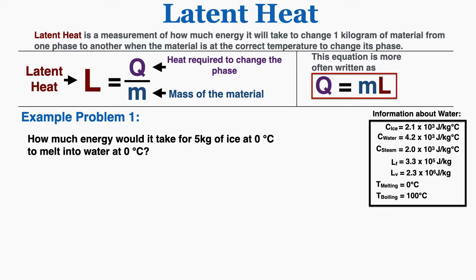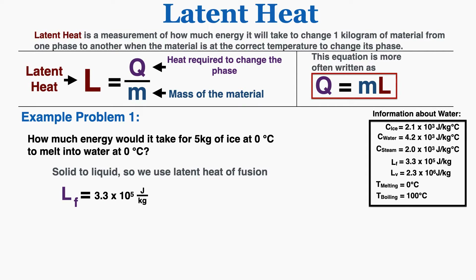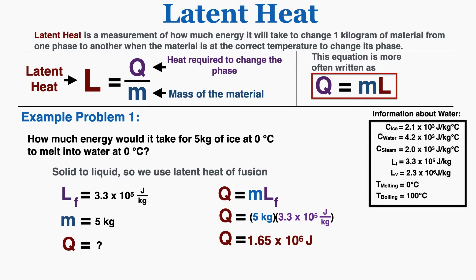Example problem 1: How much energy would it take for 5 kilograms of ice at 0 degrees Celsius to melt into water at 0 degrees Celsius? Since the material is at the correct temperature to change its phase, I can use the latent heat equation. Going from solid to liquid, I use the latent heat of fusion: 3.3 times 10 to the fifth joules per kilogram. With a mass of 5 kilograms, plugging into Q equals mL gives 1.65 times 10 to the sixth joules.